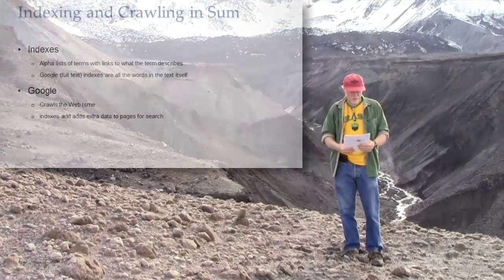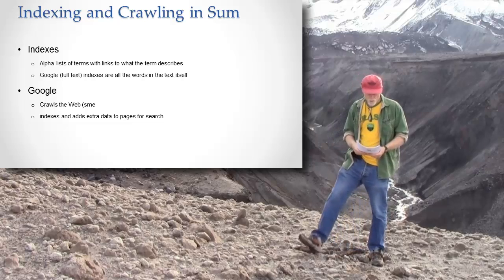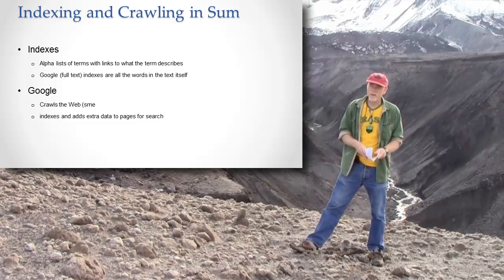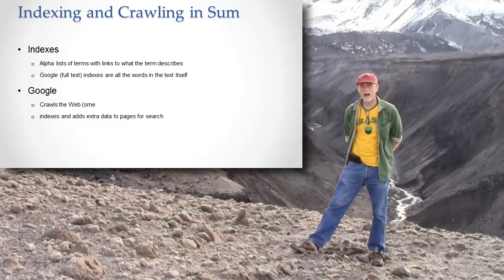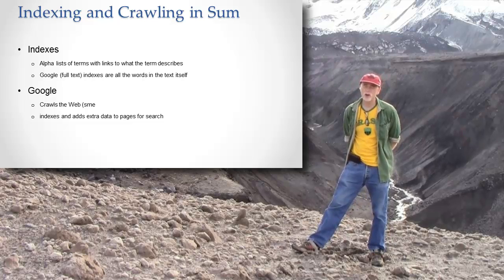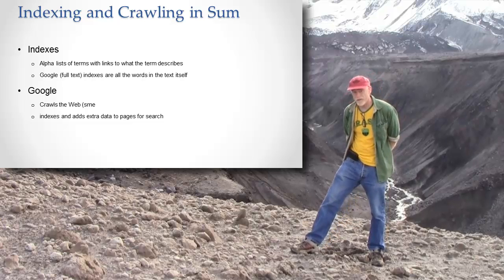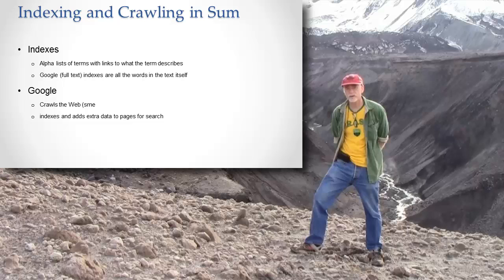Let me now summarize where we've been. We got the idea of an index. And if I haven't said it enough times, I'll say it one more time: an index is an alphabetical or numerical list of terms. They could be single words. And in the case of Google, I want you to understand that they are single words — they're every single different word.